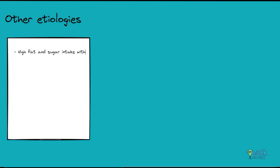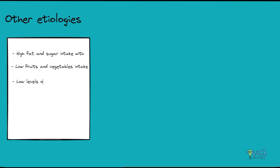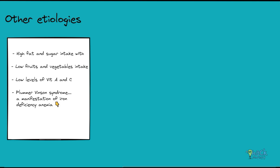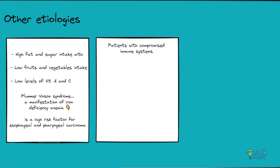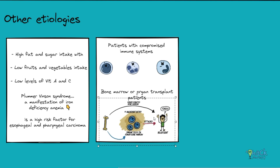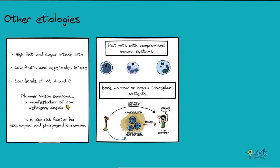High fat and sugar intake with low fruits and vegetables has been implicated as a risk factor. Low levels of vitamin A and C is another risk factor. Plummer-Vinson syndrome, also called Patterson-Kelly syndrome, is one of the most significant manifestations of iron deficiency anemia, and it predisposes an individual to pharyngeal or esophageal squamous cell carcinoma. Patients with a compromised immune system — especially individuals with HIV or AIDS, or those whose immune systems are suppressed for bone marrow or organ transplant — have considerable risk of developing oral cancer.